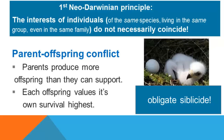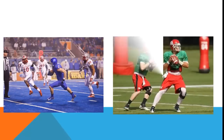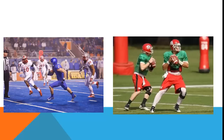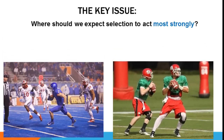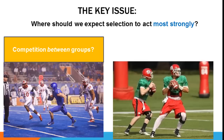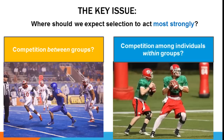That's conflict within the same family, much less the same species. On the left we have Boise State playing New Mexico — two teams in competition — and on the right we have two quarterbacks competing, playing for Rutgers. This illustrates a key issue: where should we expect selection to act most strongly? In competition between groups, or in competition among individuals within groups? The neo-Darwinian position is that selection acts much more strongly among individuals within groups than it does between groups.